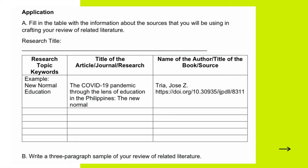In the application portion, we will practice how you will review your literature. Fill in the table with the information about the sources that you will be using in drafting your review of related literature. Write your research title, then on the first column write your research topic keywords or variables, on the second column write the title of your source — the article, journal, or research title — and on the third column write the name of the author, title of the book, and your source.